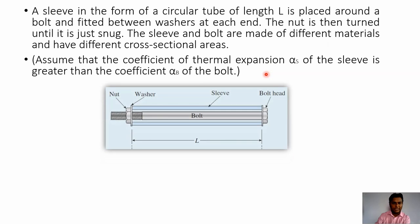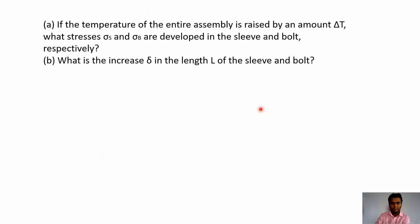In this given example we have a sleeve and a bolt. This assembly is fixed using washers and nuts, and we can say this is a composite bar. We have to find: if the temperature of the entire assembly is raised by an amount delta T, what stresses sigma_s and sigma_b are developed in the sleeve and bolt respectively, and what is the increase delta in length L of the sleeve and the bolt.